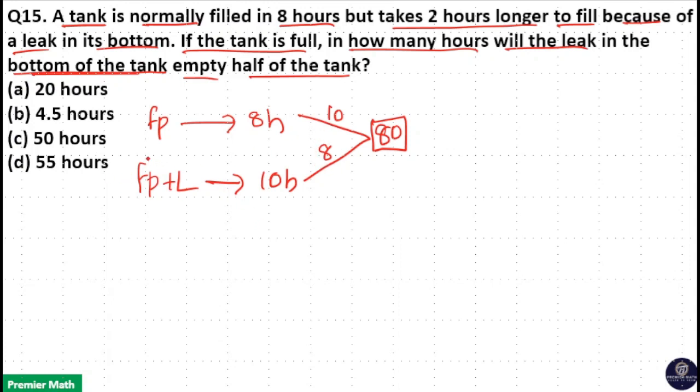That means here efficiency of pipe is 10 and efficiency of leak is 2 because 10 minus 2 is 8. So here efficiency of leak is 2. Means that this leak can empty 2 liter of water in an hour.